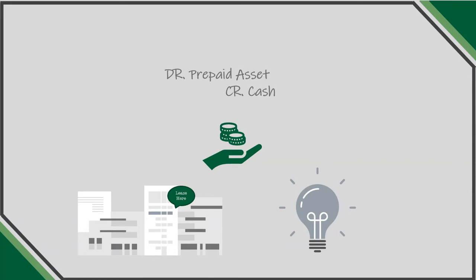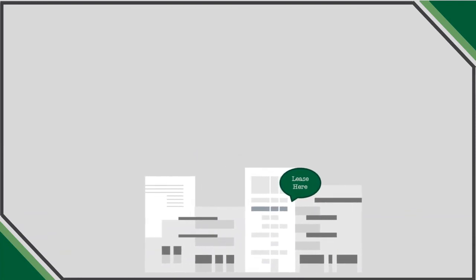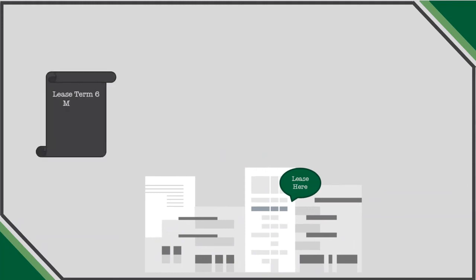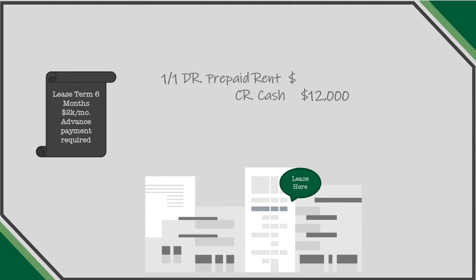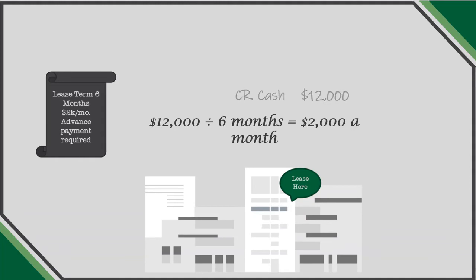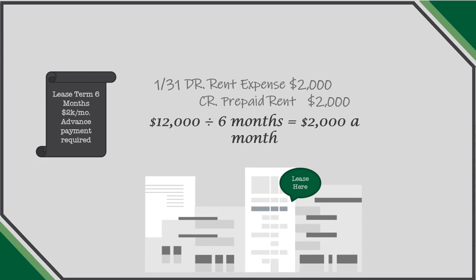The asset account is reduced when the expense is incurred. For example, let's say a company needs to lease space to sell its product in a local mall. If the company pays six months of rent up front, it receives a small discount. The company decides to pay $12,000 on January 1 for the use of the lease space over the next six months. The cash payment is a credit to cash of $12,000, and the debit is to prepaid rent. Since the expense of using this space doesn't occur until it's actually used, at the end of each of the next six months the company will record rental expense of one-sixth of $12,000, or $2,000, by debiting rent expense for $2,000 and crediting prepaid rent for $2,000.